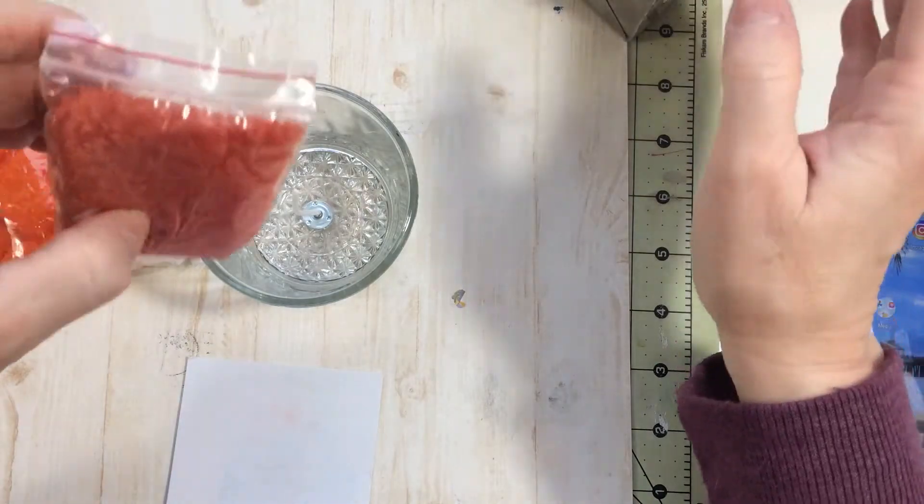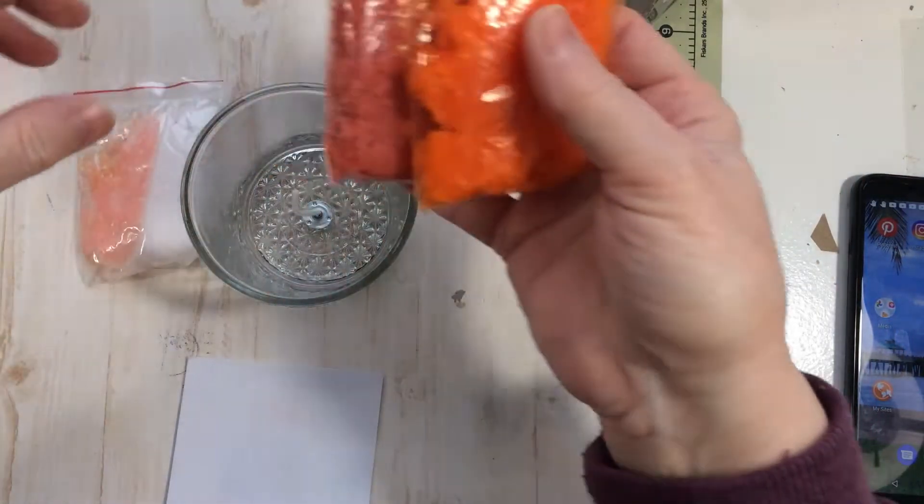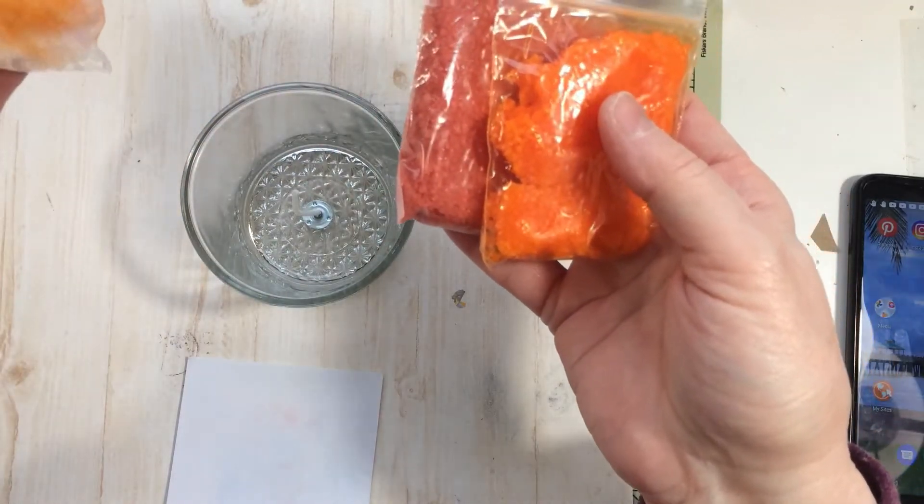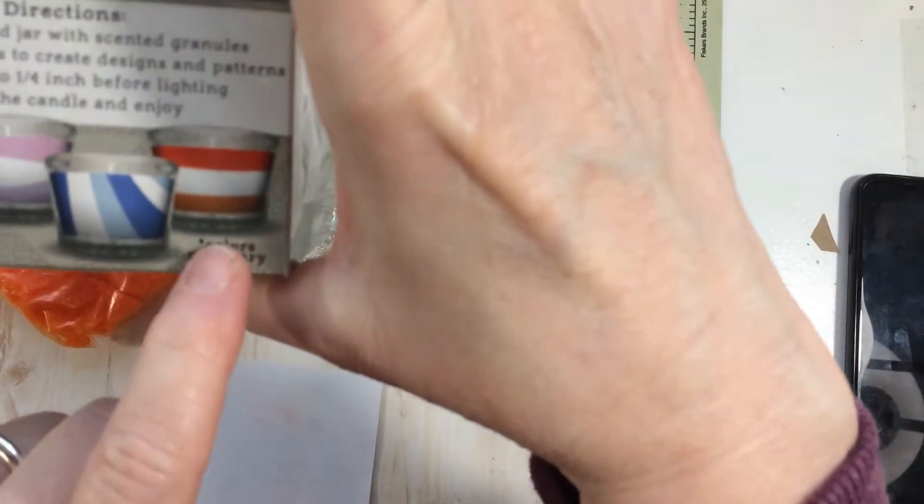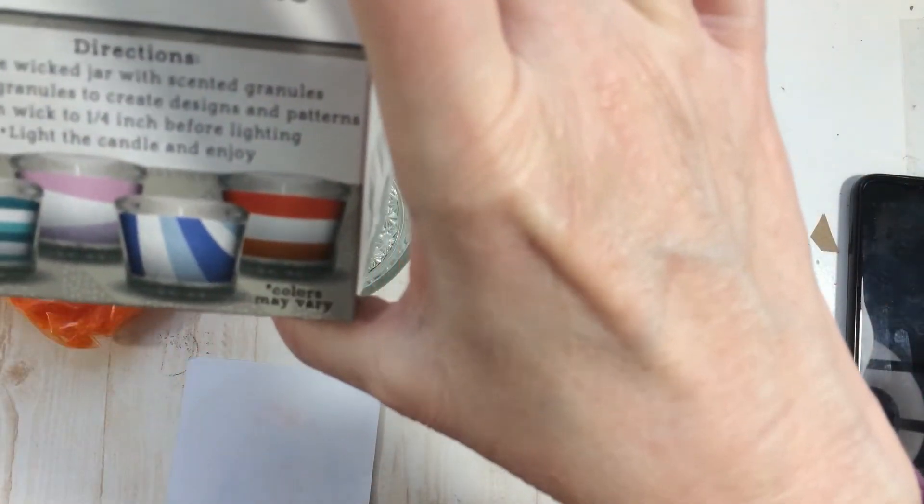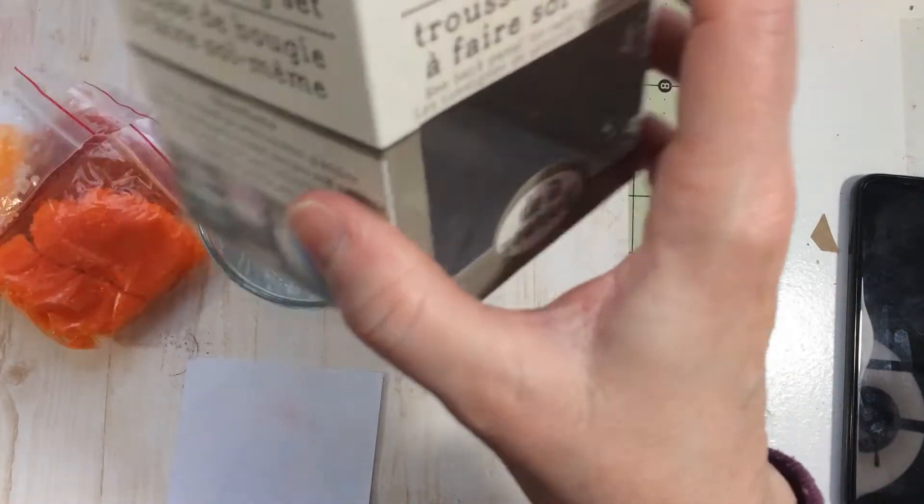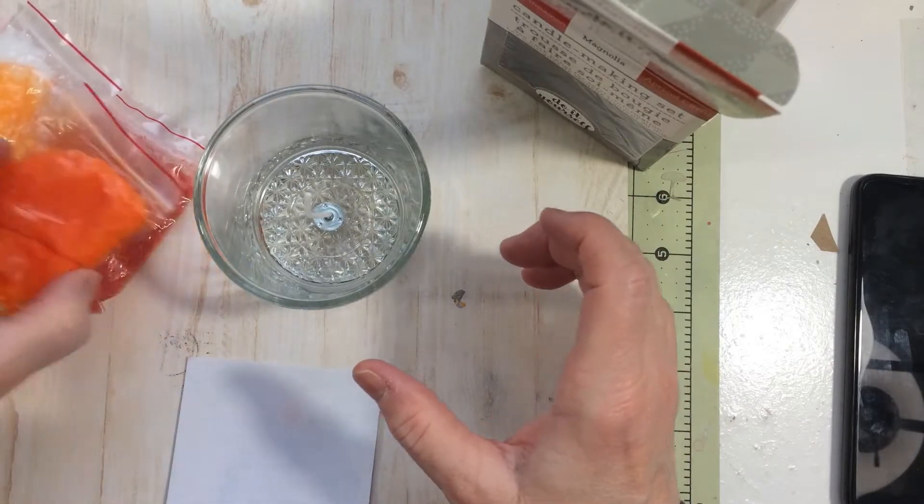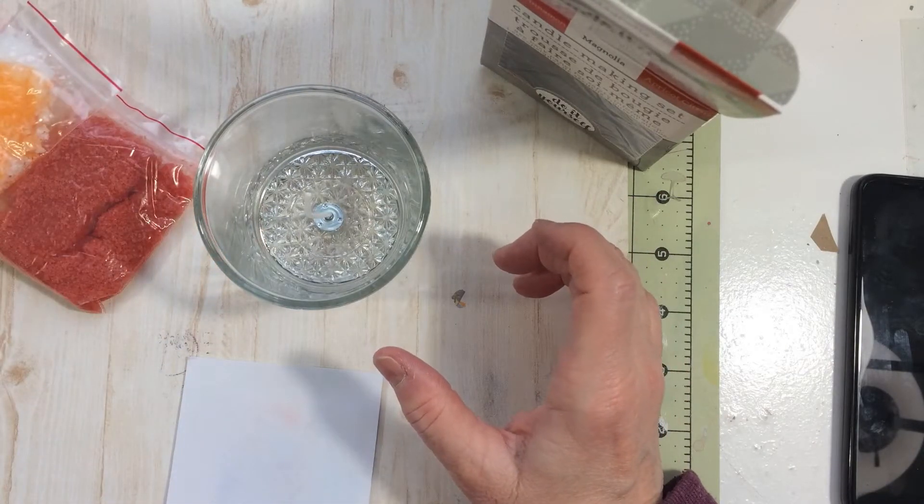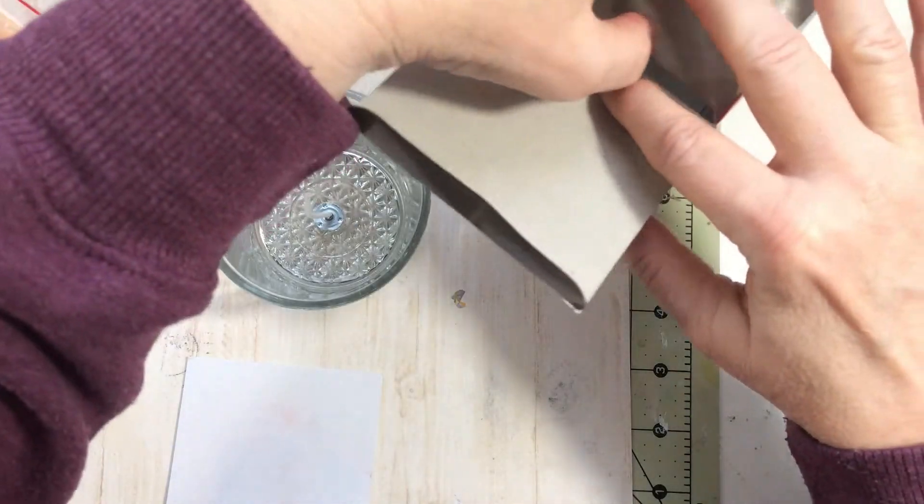What you do is layer your granules in your jar. There are different granules and it shows here on the box how to put them in there. I thought I was buying apple cinnamon and I picked up magnolia, but the smell is really kind of strong.